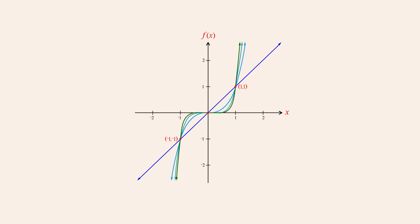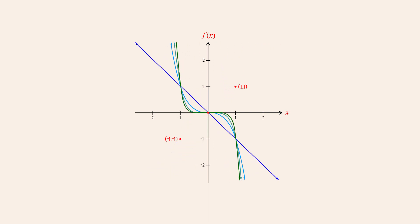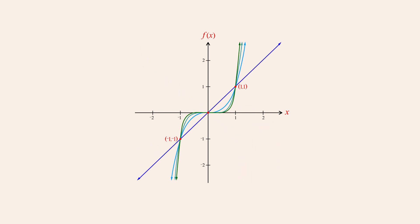Instead of being symmetrical with respect to the vertical axis, odd powers are symmetrical with respect to the origin. A graph is said to be symmetrical with respect to the origin if it is unchanged when reflected across both the vertical axis and the horizontal axis. Another way of looking at symmetry with respect to the origin is that for every point that lies on the graph, there is another point the same distance from the origin that falls on a line running through the origin.